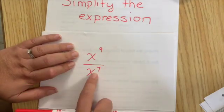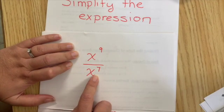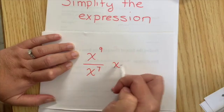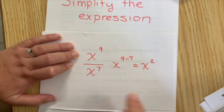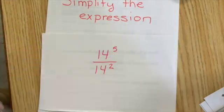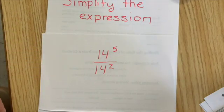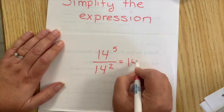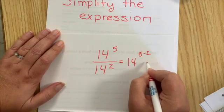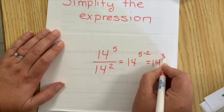So try doing this one with the rule. So it would be x to the nine minus seven or x squared. Try this one. Would be 14, five minus two, or 14 cubed.